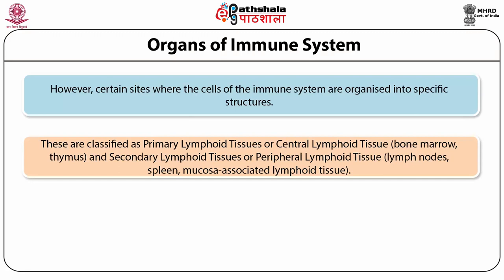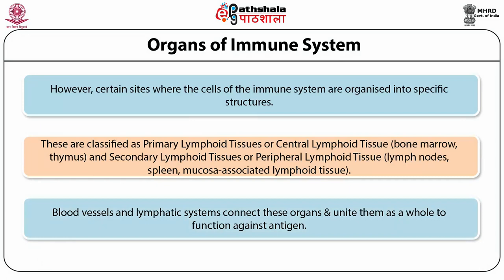Primary lymphoid organs include bone marrow and thymus. Secondary lymphoid tissues include lymph nodes, spleen, and mucosa-associated lymphoid tissues, also called MALT. Blood vessels and the lymphatic system connect these organs and unite them as a whole to function against the antigen.